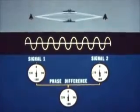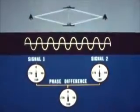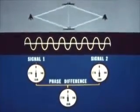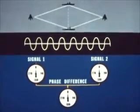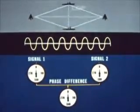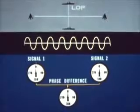And as long as the receiver remains on a line equidistant from both stations, the phase difference remains zero. This series of zero phase points establishes a line of position for the receiver.